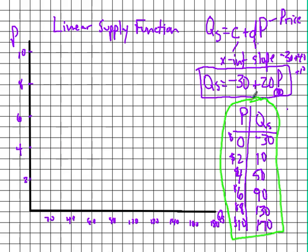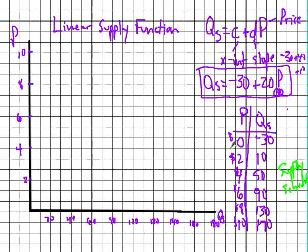What have we created here? Hopefully you recognized this as a supply schedule. We've created a supply schedule based on this linear supply function. Now let's plot the points. At a price of zero, quantity is negative 30 — that's over here on the left — but we're not concerned with negative quantities.